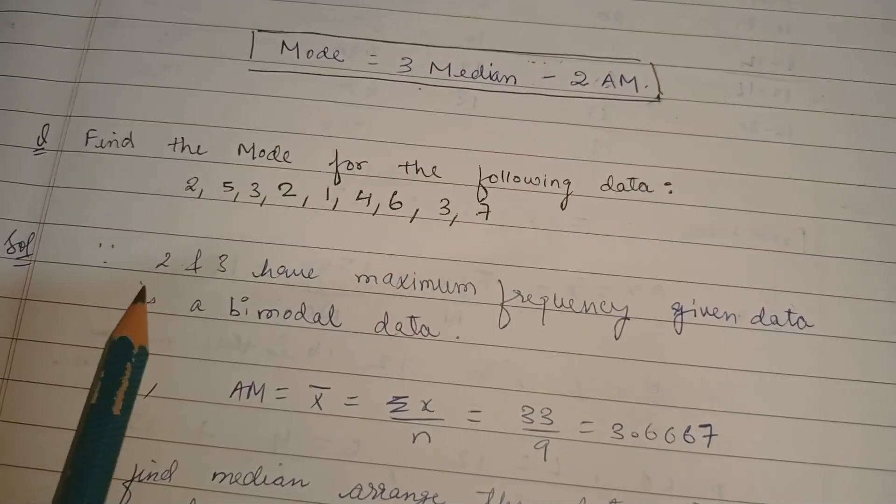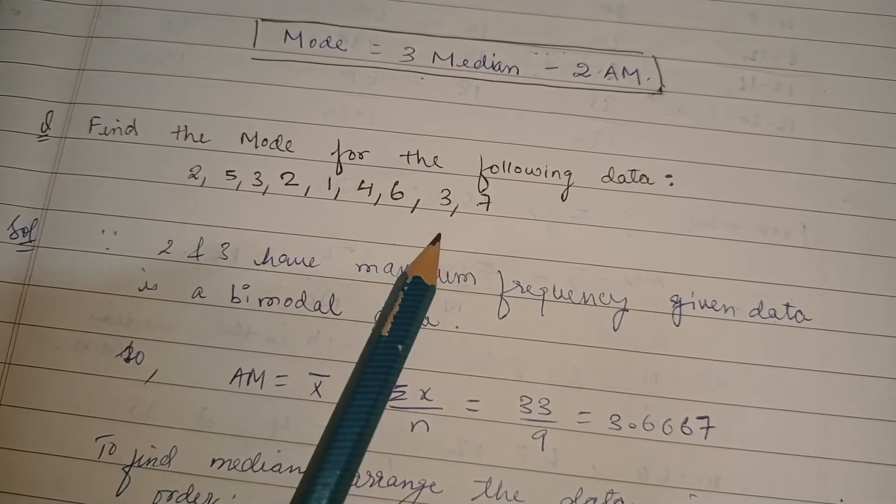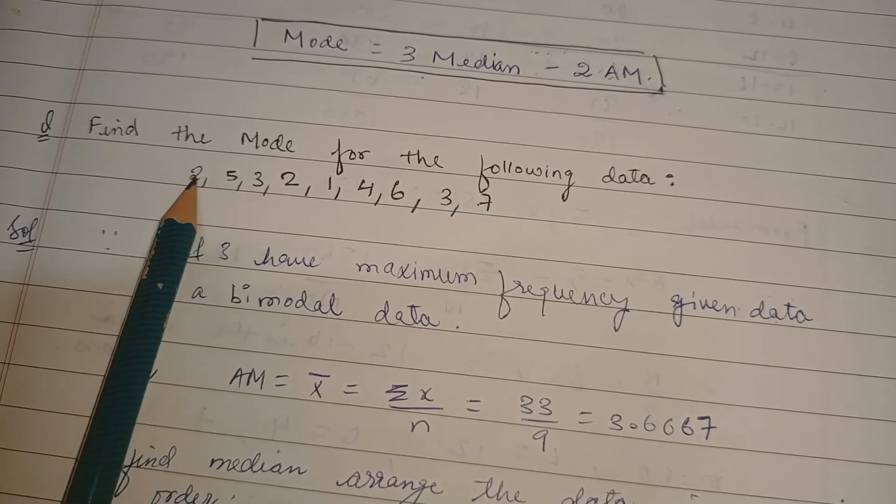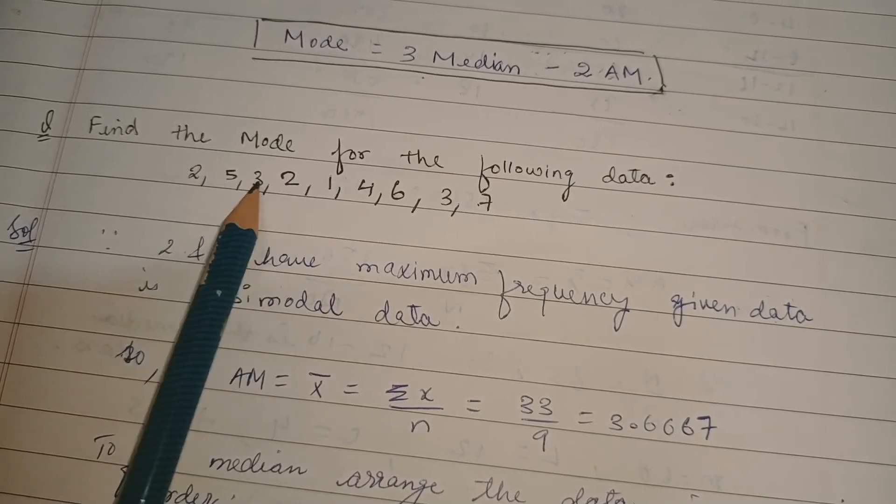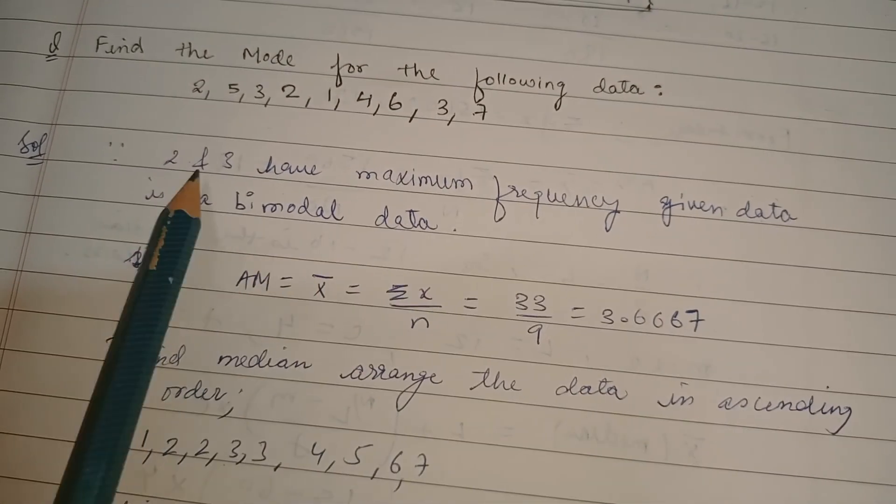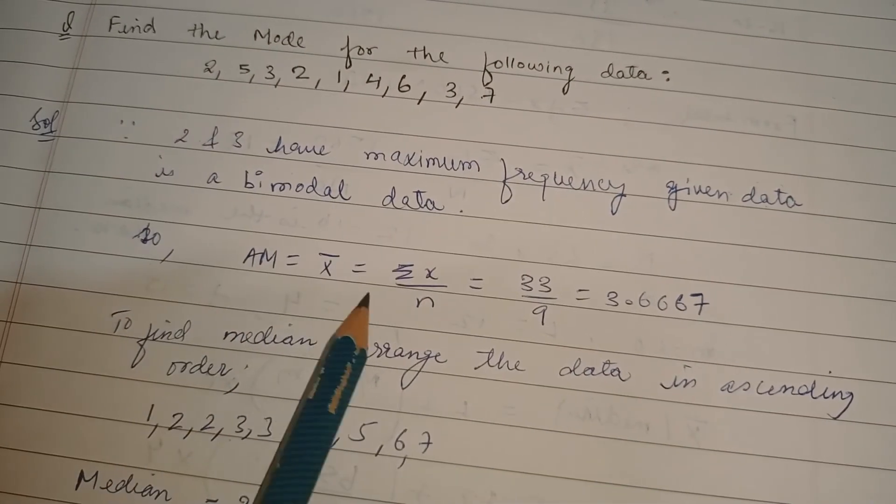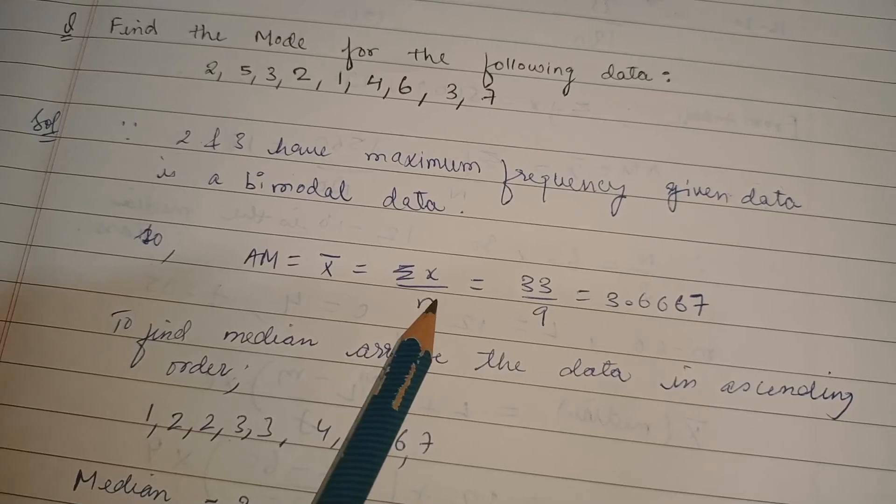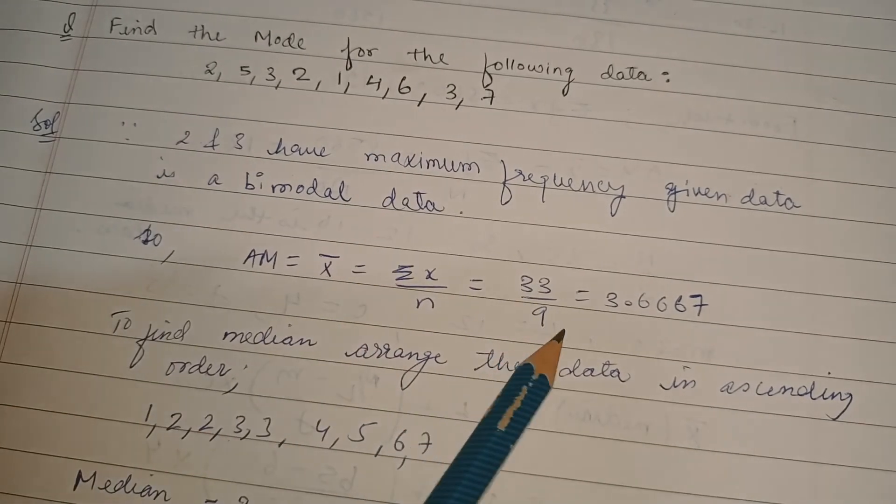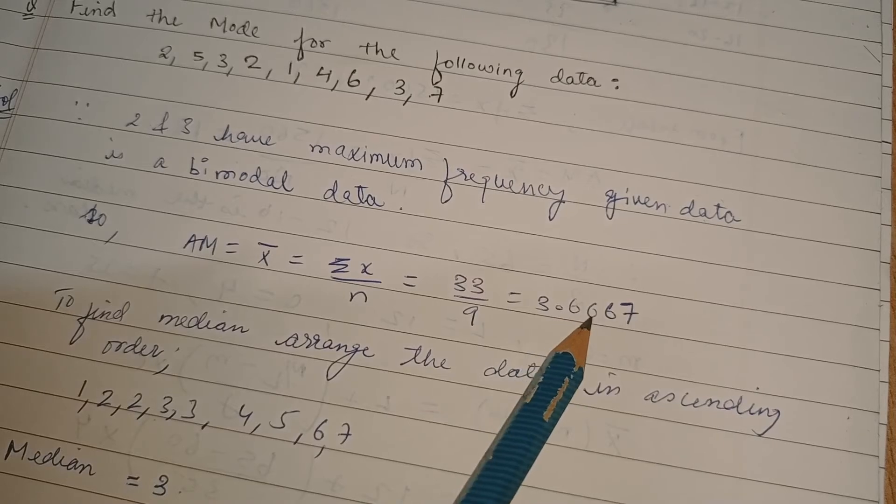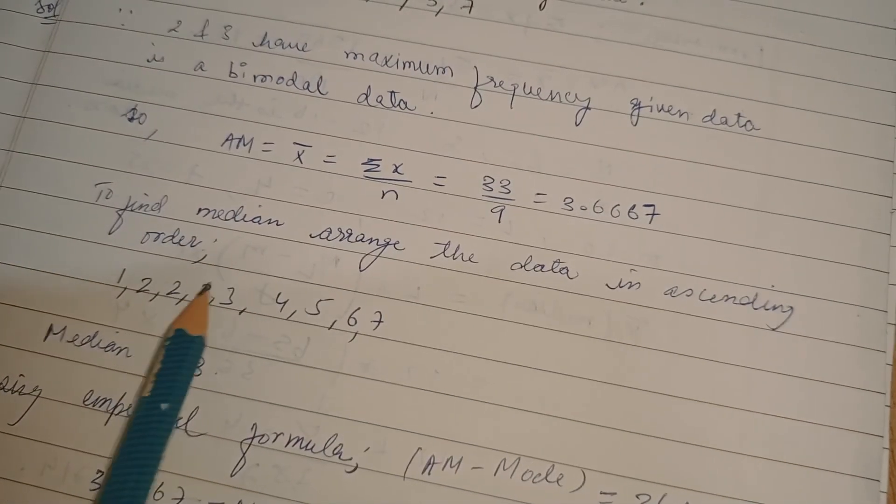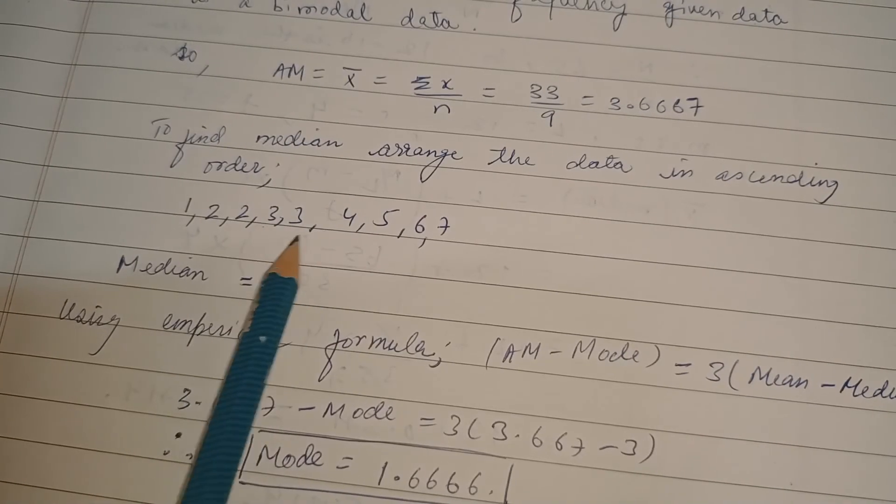There is raw data given. What is the maximum frequency? 2 is occurring 2 times, 3 is occurring 3 times, so it is bimodal data. Arithmetic mean is summation of x by n. N is the number of observations, and summation is sum of all these values, 33 by 9, that is 3.6667. To find the median, arrange the data in ascending order. We have arranged the data in ascending order, and the middle-most value is 3. That would be the median.